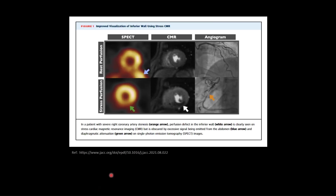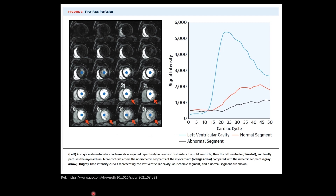Here we can see correlation of perfusion with SPECT and angiogram. A non-enhancing area on perfusion corresponds to decreased uptake on SPECT and stenosis on angiography in the same vascular territory. The same finding is shown as a graph — the black curve is the abnormal segment, taking up less contrast on perfusion compared to the normal enhancing segment.